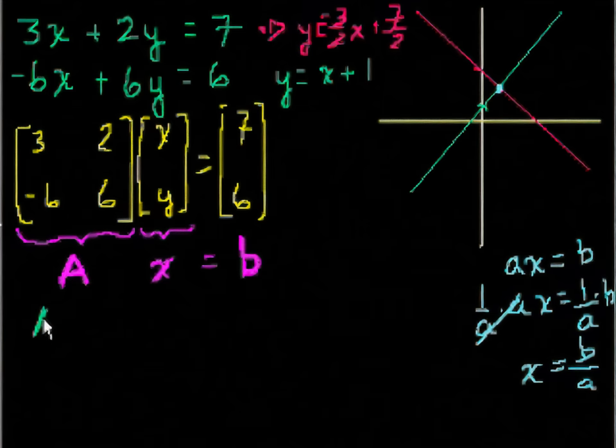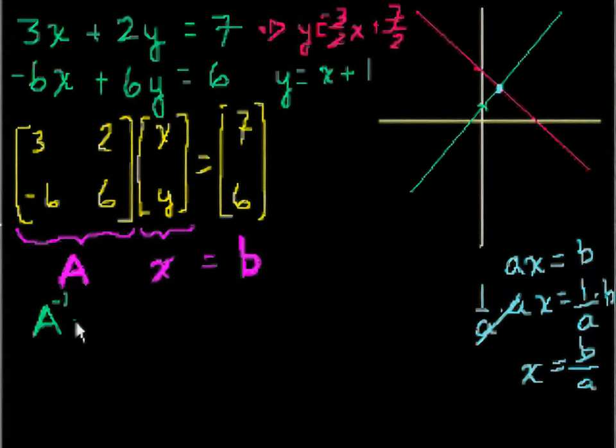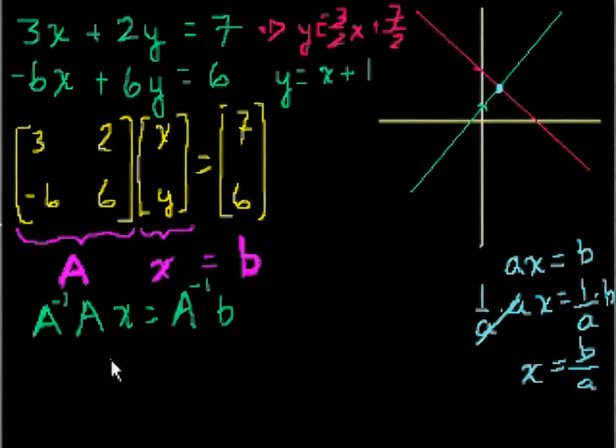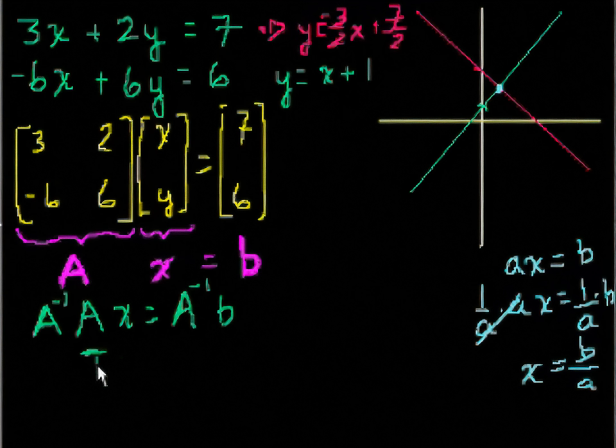So you get A inverse times A times the vector x is equal to A inverse times b. All I did is I took this expression and I multiplied both sides by A inverse. And what's A inverse times A? Well, that's just the identity matrix, right? That's the identity matrix times x is equal to A inverse b. And of course, that's just x. The identity matrix times any other matrix is just that matrix, so that's just the matrix x or the vector x times A inverse b.